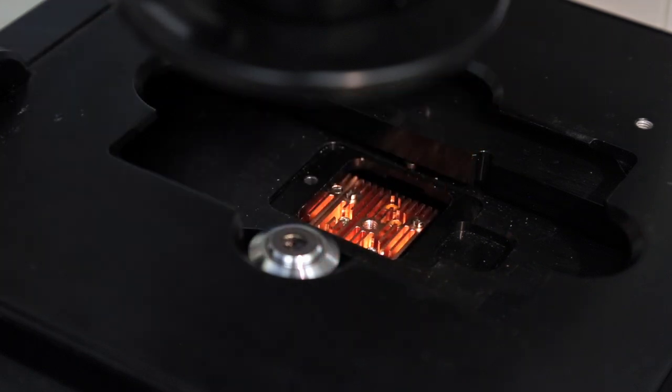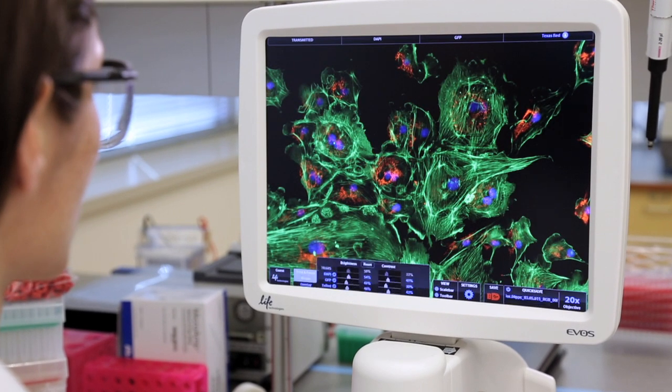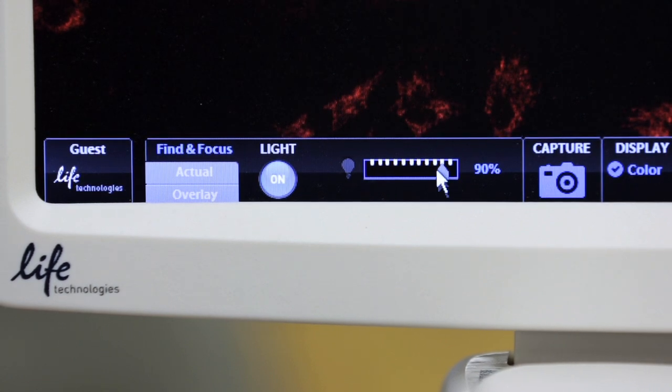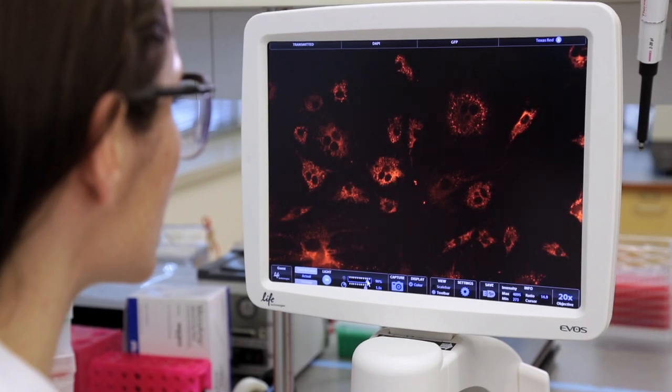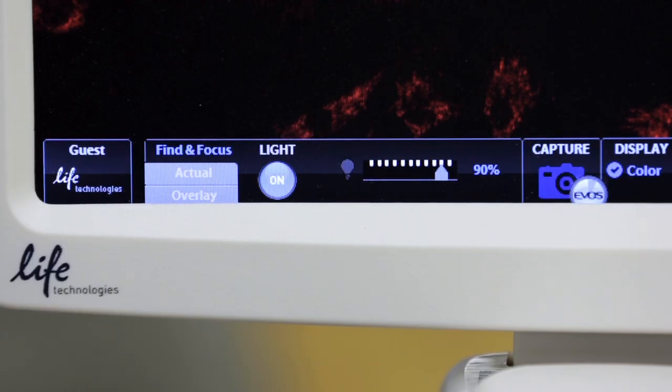Capturing 3-color fluorescence images is easy using the intuitive user interface on the EVOS FL imaging system. Simply turn on the light source and focus the image. Brightness and contrast can be adjusted with the on-screen slider bars. Click the capture icon to capture the image.